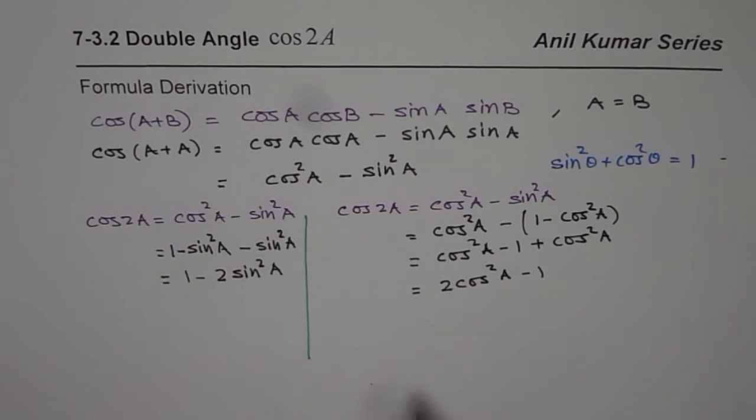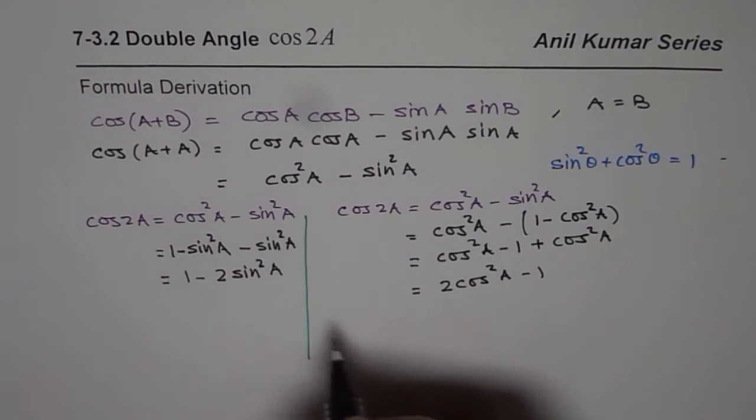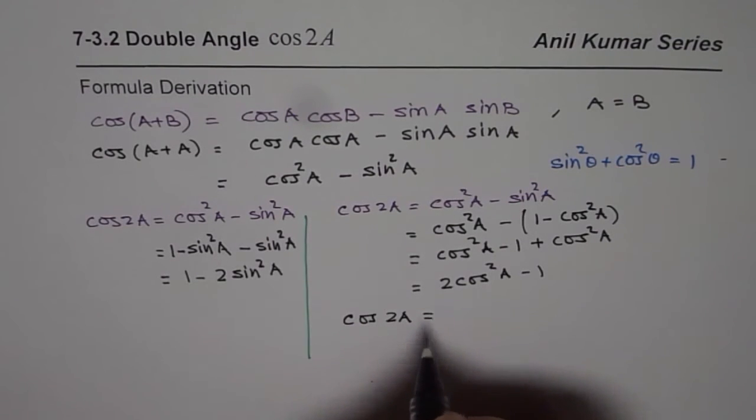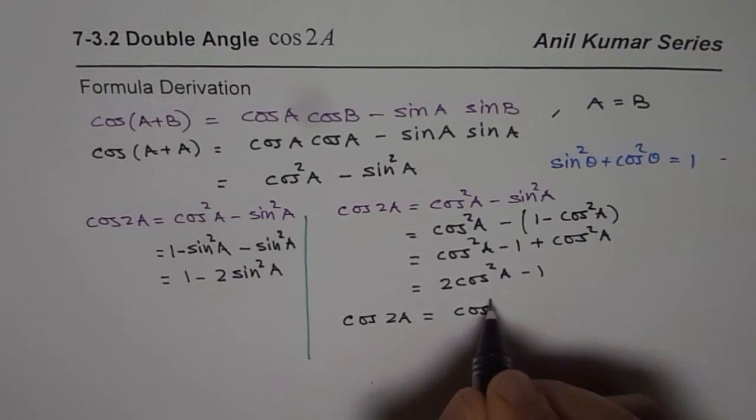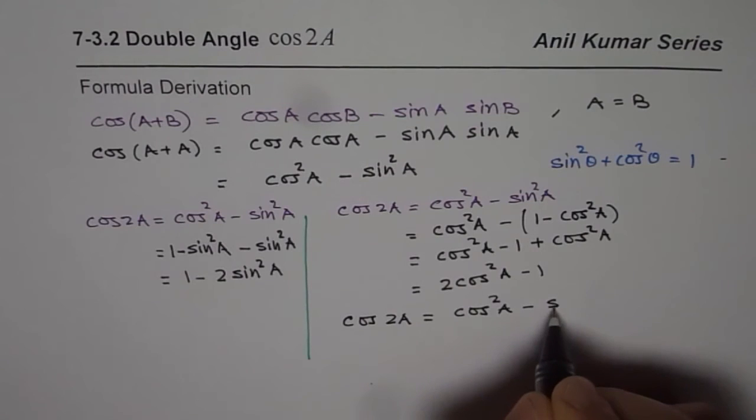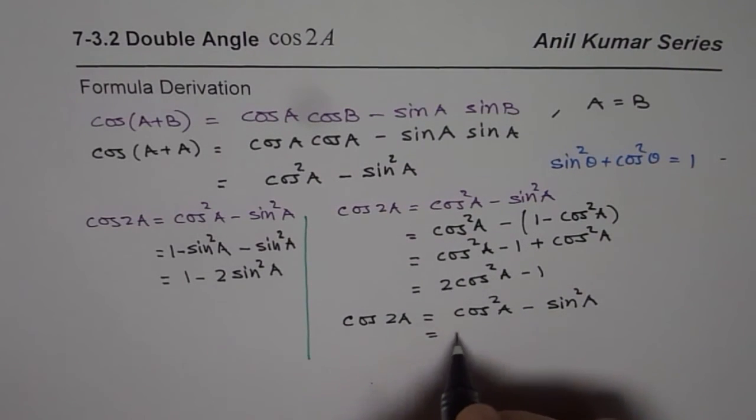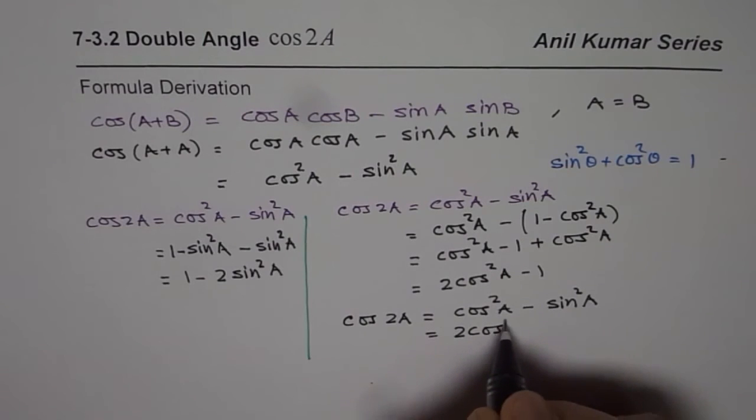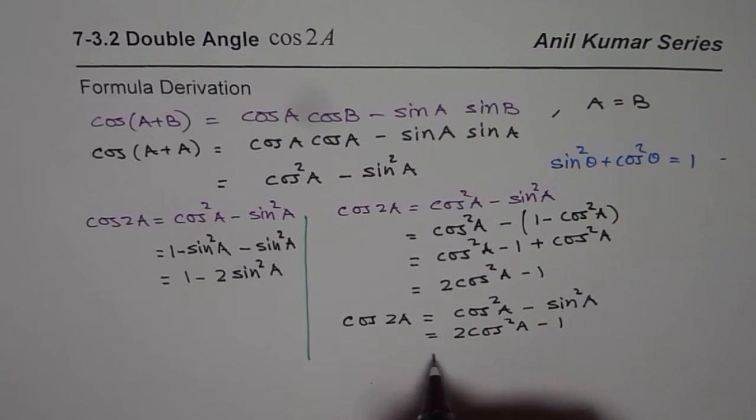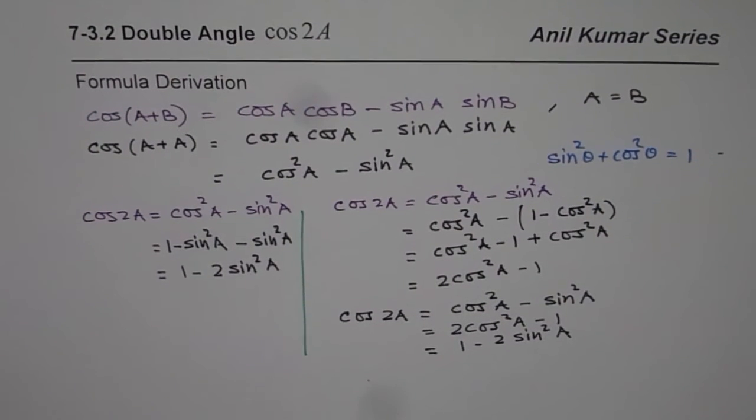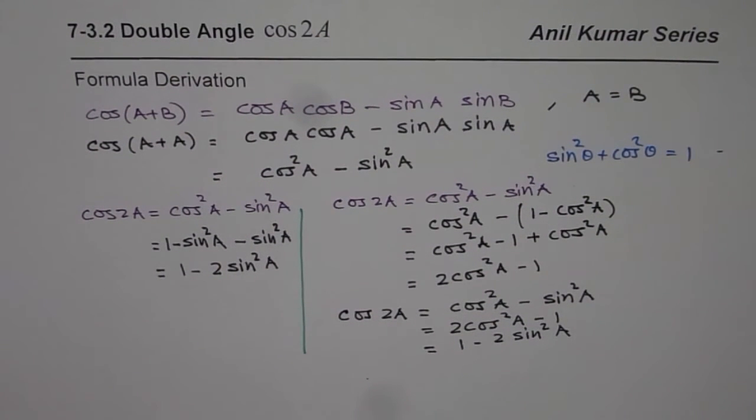So we have 3 different formulas. Let me now summarize that cos of 2A can be written as cos square A minus sin square A, or 2 cos square A minus 1, or 1 minus 2 sin square A. These are 3 very important formulas for you.